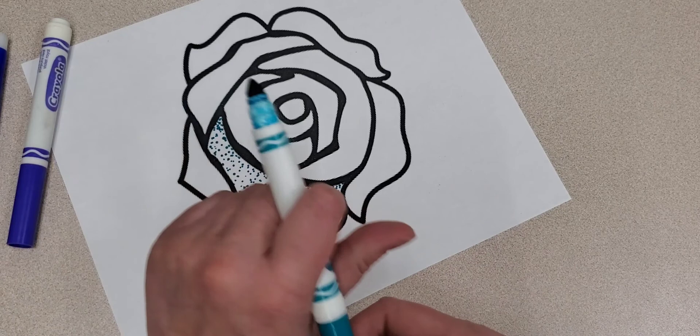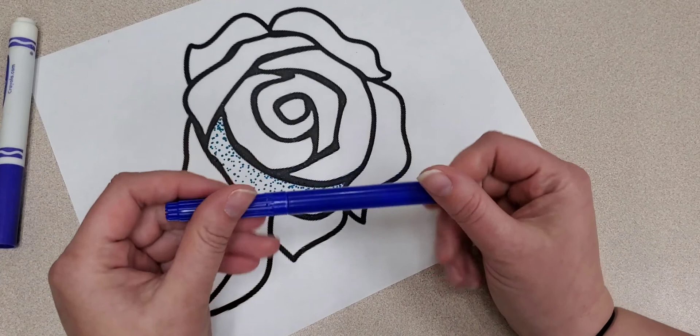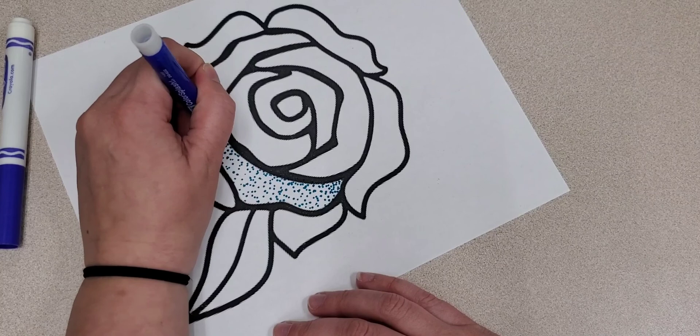Alright, so now that we have this spot all done, I'm going to go ahead and select my next color. For this one I'm going to go ahead and use this regular plain old marker. And I'm going to do almost the same exact thing.